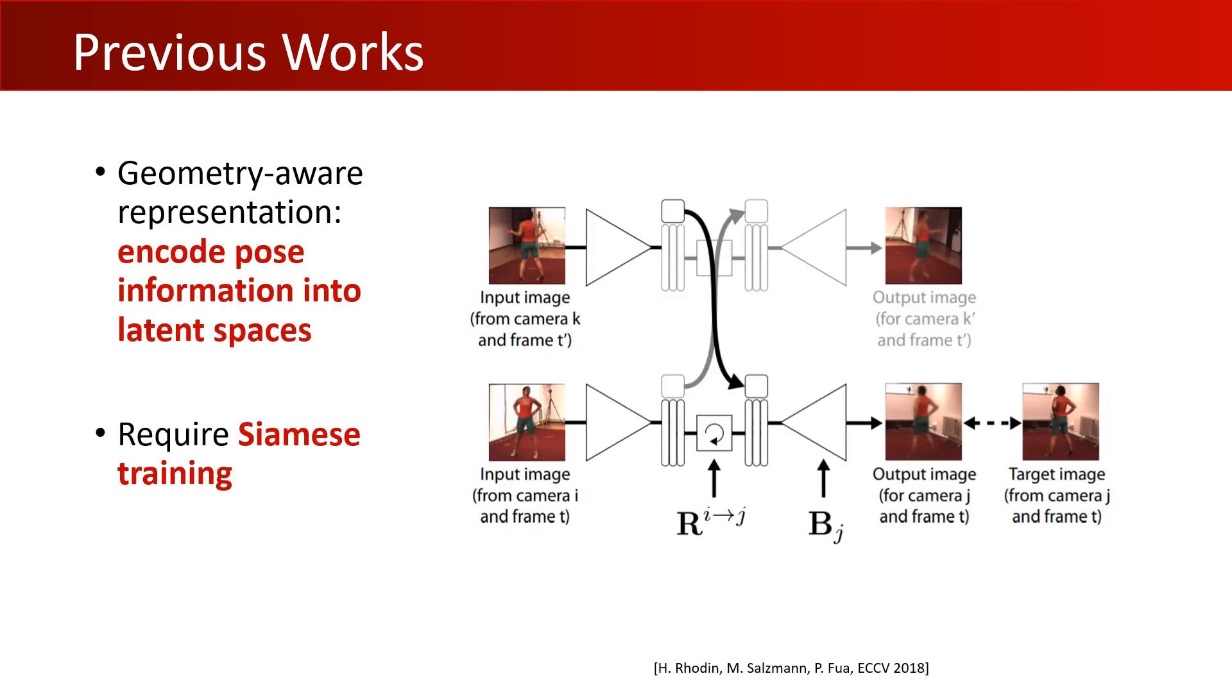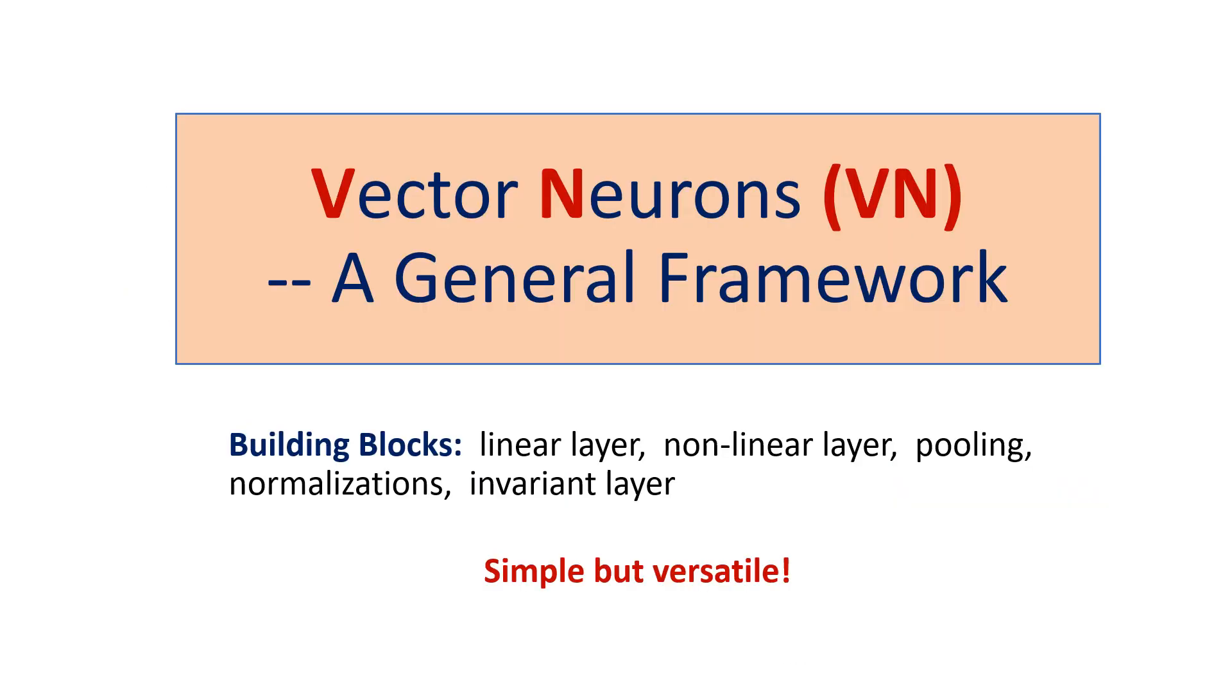Most related to us are the works using geometry-aware 3D representations that can encode 3D pose information into their latent spaces, but they usually require supervised training with relative poses. In this work, we propose a simple yet versatile framework called Vector Neurons with acronym VN for constructing SO3 equivariant point cloud networks. We'll show that a diverse collection of network-building blocks can be rewritten into the VN form, acquiring rotation equivariance while preserving their basic properties.